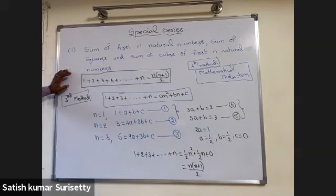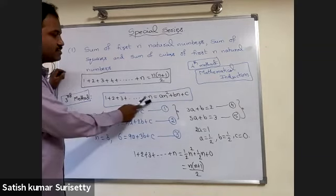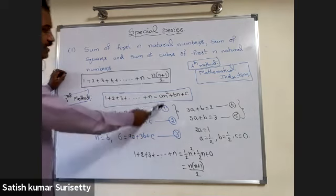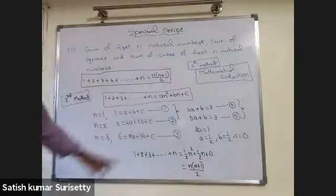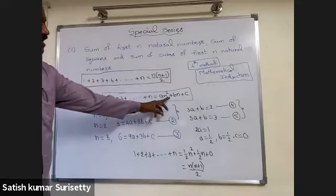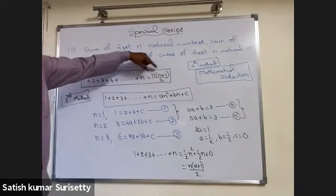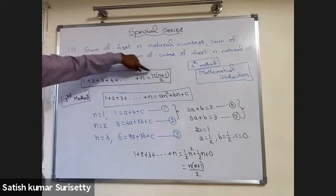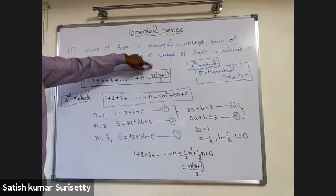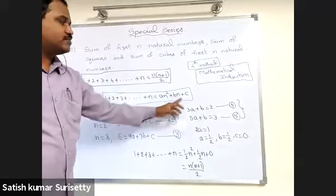The third method for sum of first n natural numbers: 1 plus 2 plus 3 and so on n is taken as a quadratic a n squared plus b n plus c. We assume it is quadratic because we already know the answer is n into n plus 1 by 2, which is a quadratic expression.